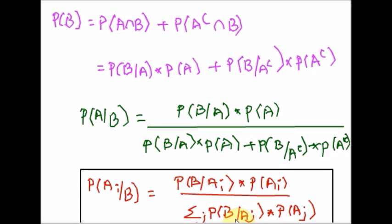Bayes' theorem can also be written in terms of likelihood, in terms of odds and likelihood ratio, and it can also be written for probability densities. We can see those types in a separate video. Now let us see an example and apply the formula of Bayes' theorem.